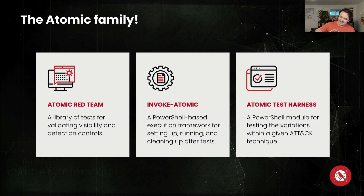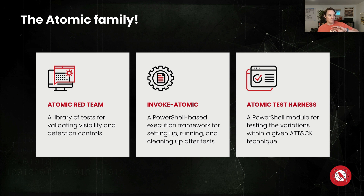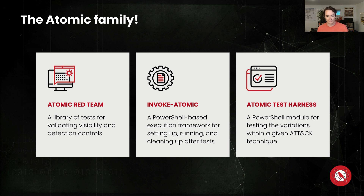Atomic Test Harnesses is a more complex testing system. It allows you to test variations on different techniques — for a given technique, you can use more than one scripting harness to run it. It will run all those different scripting harnesses for that individual technique. It's really designed to test the depth of your detectors, to stress test them and figure out if they're brittle or not.